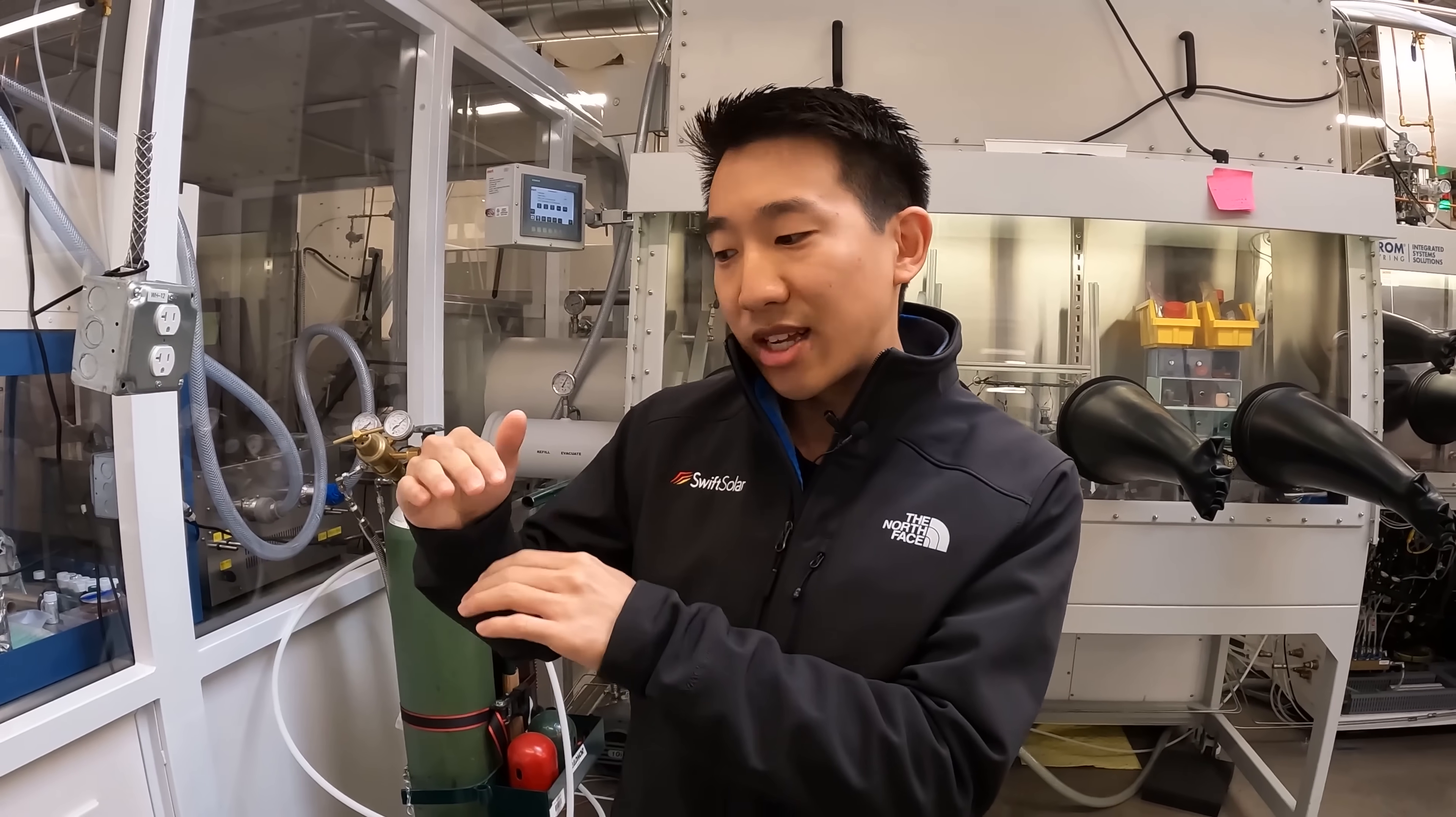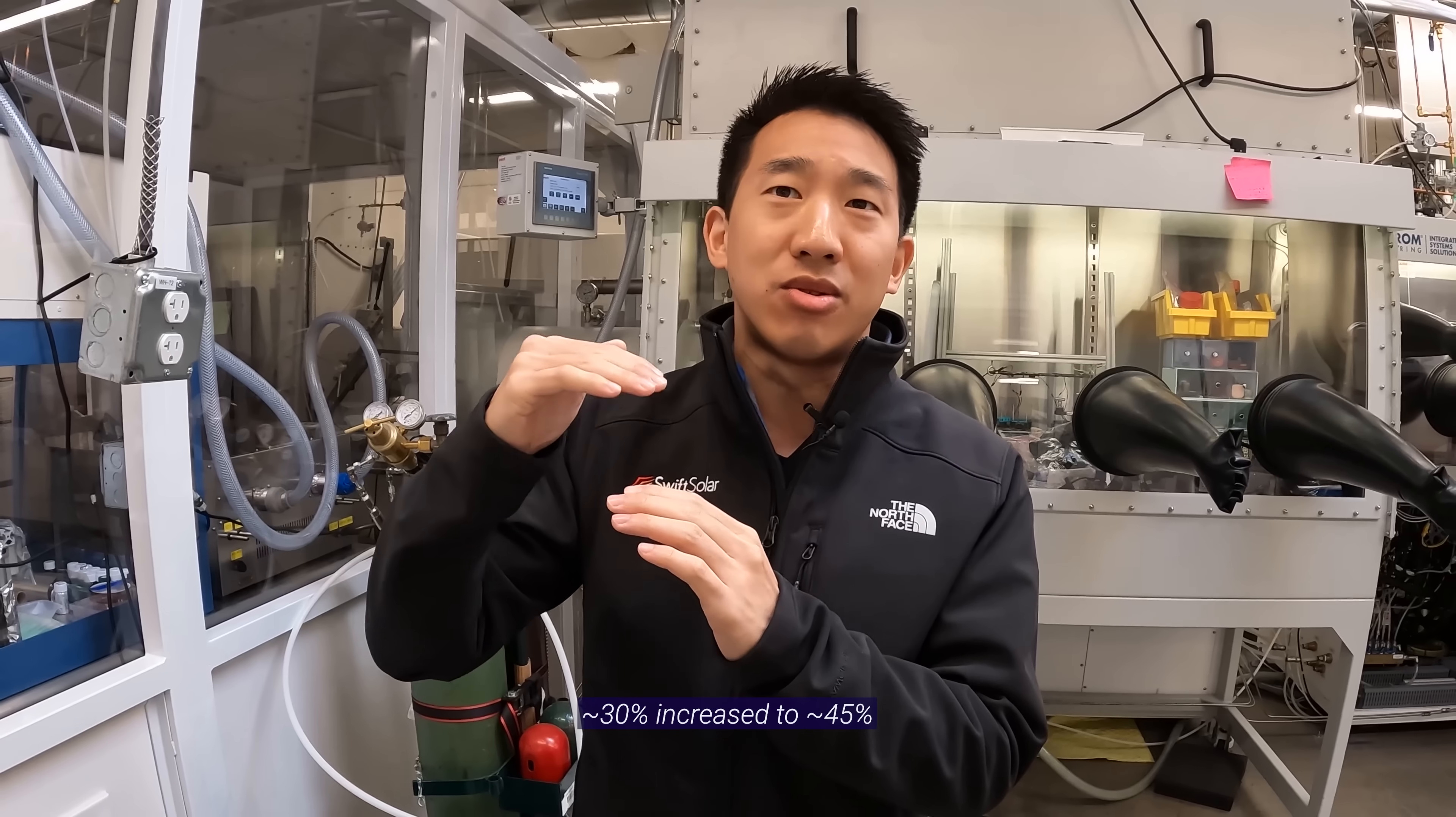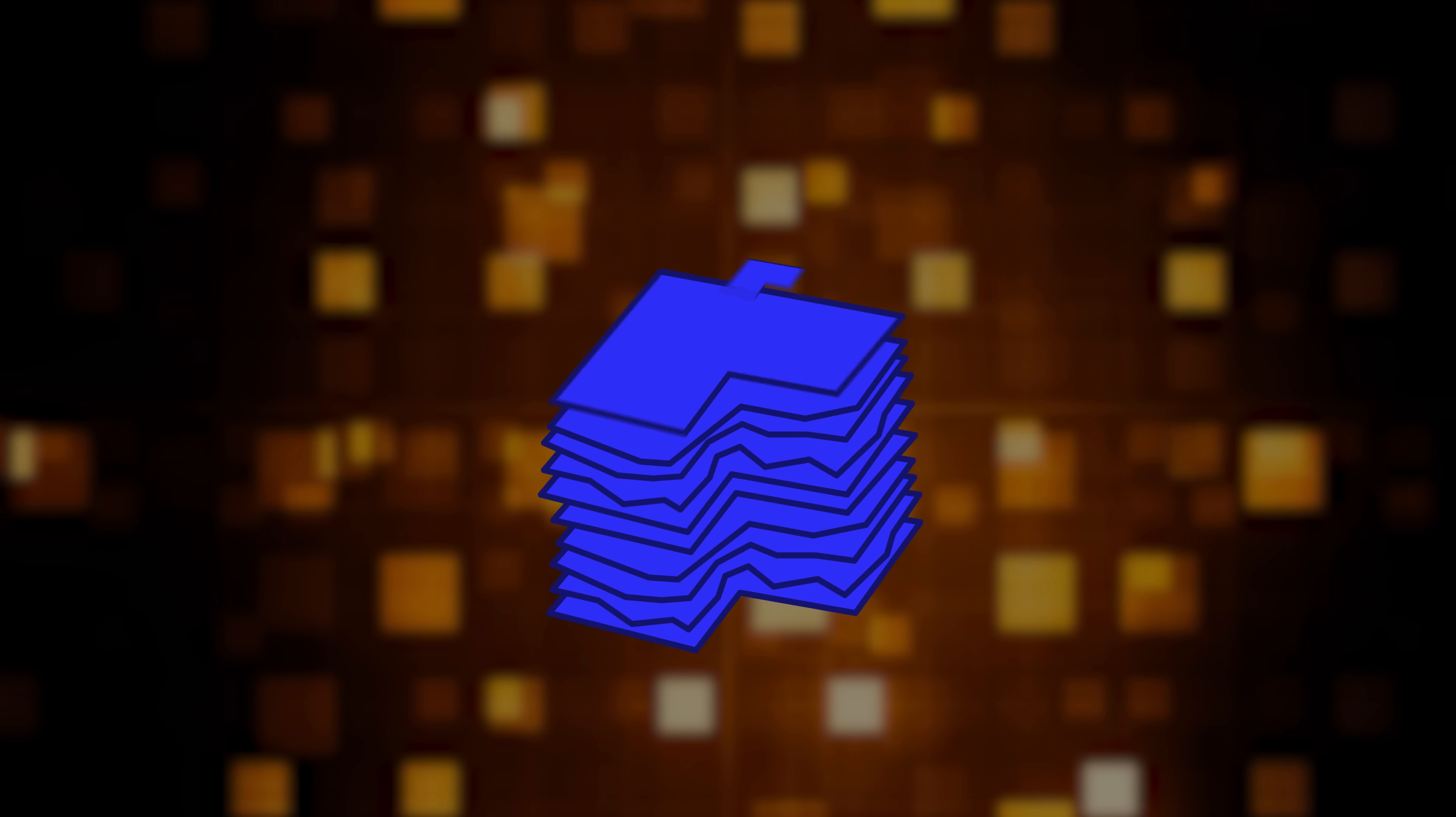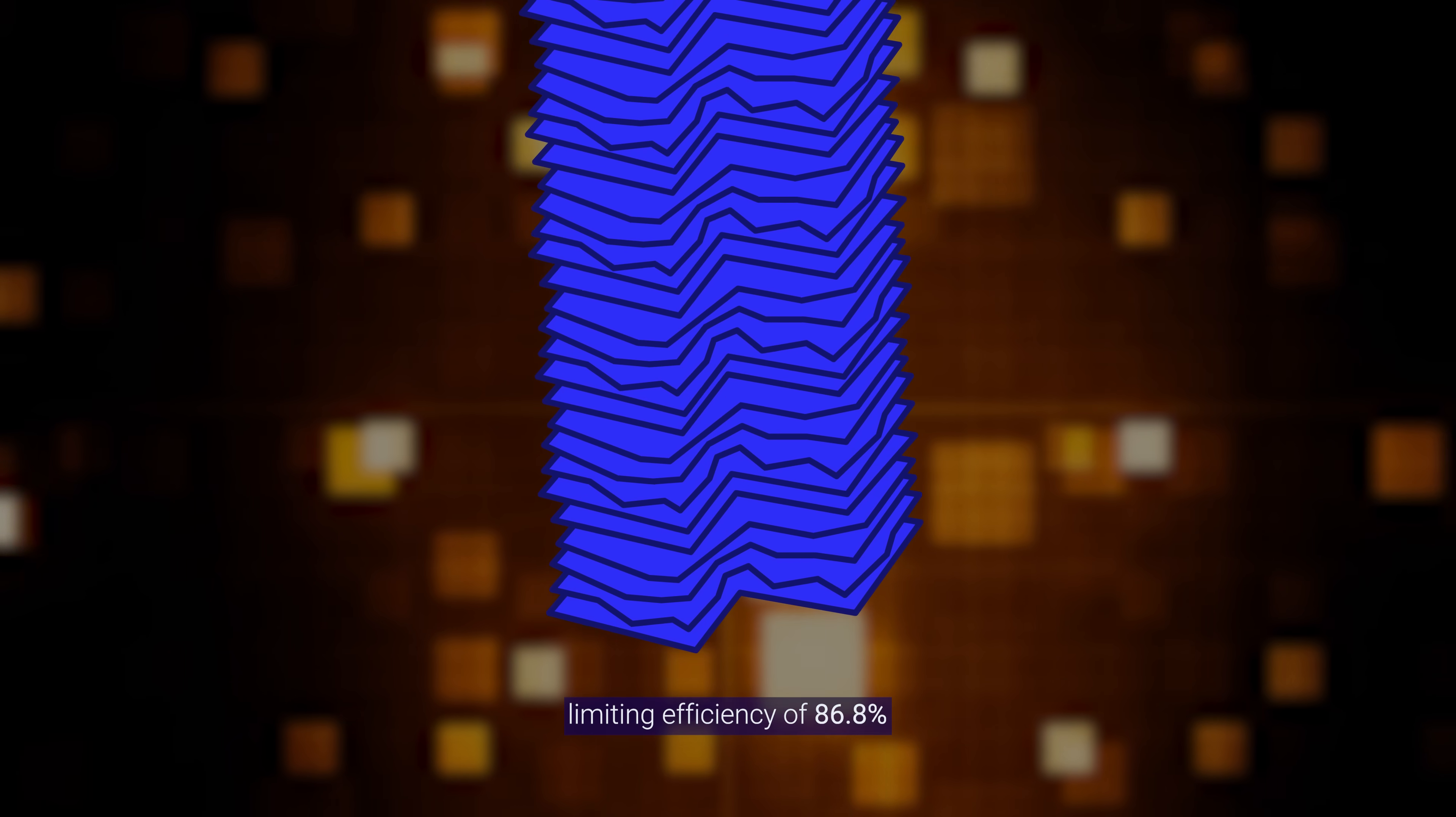So when you stack two solar cells on top of each other, that's called a tandem or a multi-junction solar cell. And when you do that, that actually pushes that efficiency limit up from 30% to over 40, about 45 or 46%. Theoretically, an infinite number of junctions would have a limiting efficiency of 86.8% under highly concentrated sunlight.